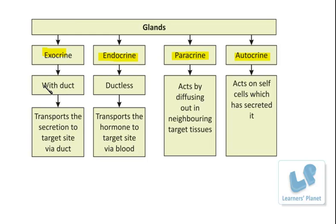Exocrine glands are connected to their target site with the help of a duct. Since the secretion is transported through a duct — a small tubular structure — it cannot move to a very long distance. So these glands have the target site in a nearby location, and the secretion is transported through the duct.